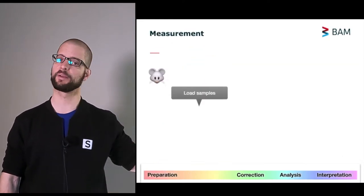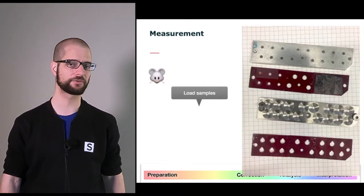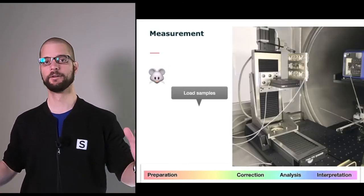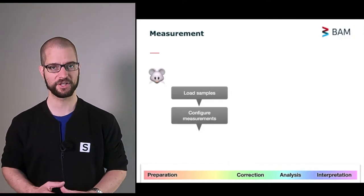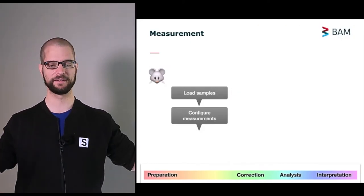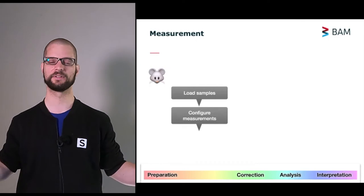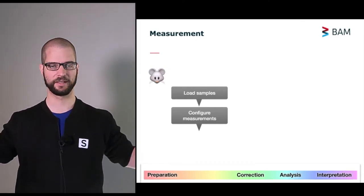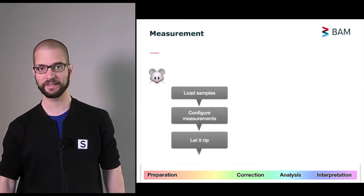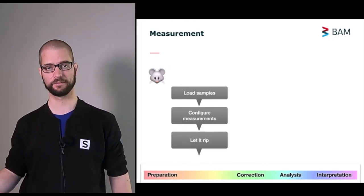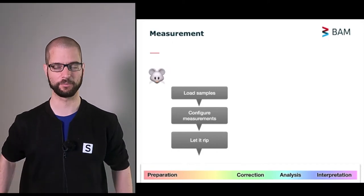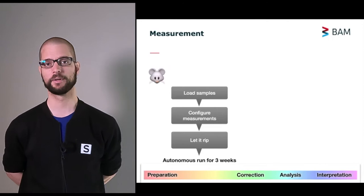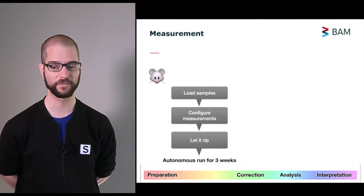Then it's up to us. We load the samples in our sample holders. We have these strips. They can hold 16 samples. We can load up to three strips in a rack for a total of 48 samples. We configure the measurements. This means we fill in our electronic logbook. This is an Excel sheet where we specify every series of measurements. And then we load that up, convert that to a script, load it up on our machine, and then we let it rip. That means that the machine is occupied for up to three weeks at a time for a full set of samples.